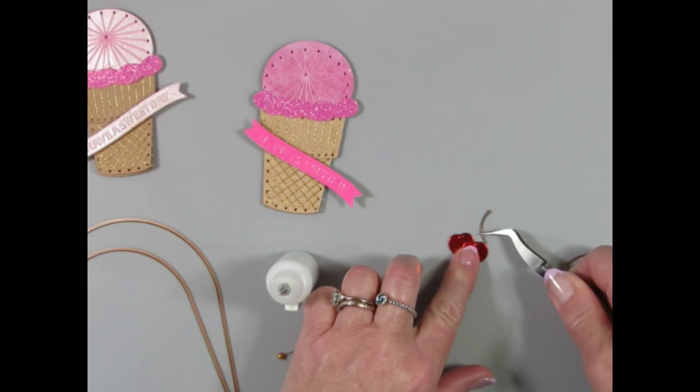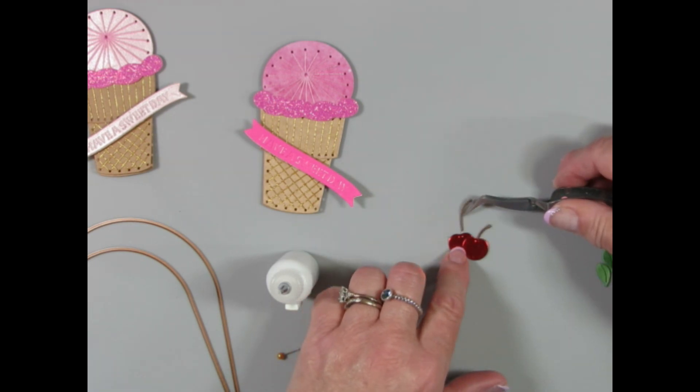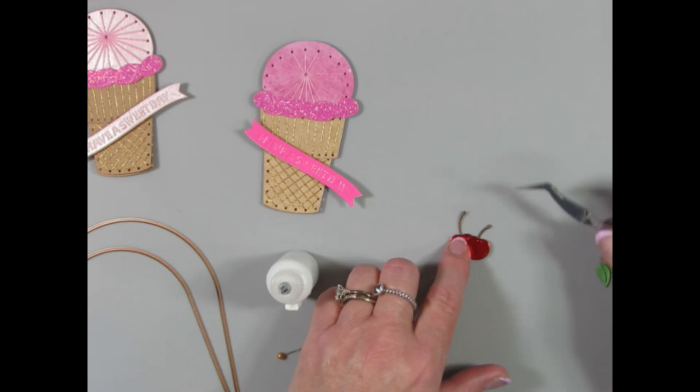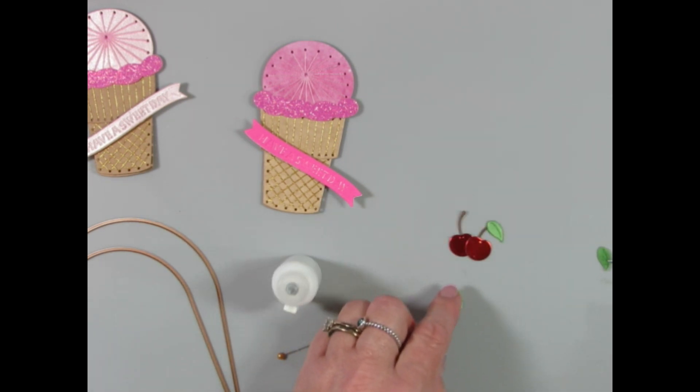Now that I've explained my thought process behind using the arches, I wanted to show you, this is me putting together these little small dies. These are the cherries. I'm going to have one ice cream cone have two cherries on top, and the other one will have one cherry on top.